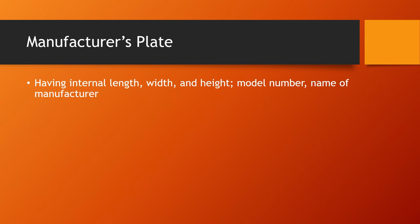Finally, the manufacturer's plate is sometimes also attached to the container. It contains details of the internal length, width, and height of the container, and includes the model number and the name of the manufacturer. I hope you guys are now familiar with the container markings. If there's something I missed, let me know. If you are ever asked a question about container markings and what they stand for, here is your answer. Thanks, bye for now.